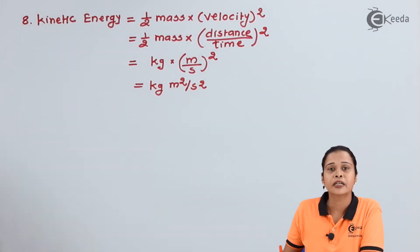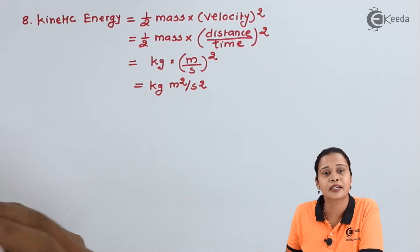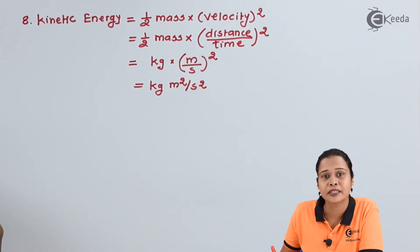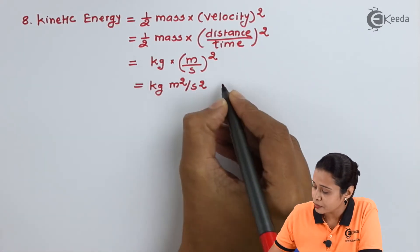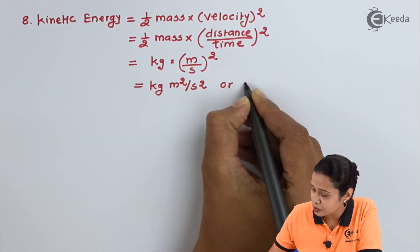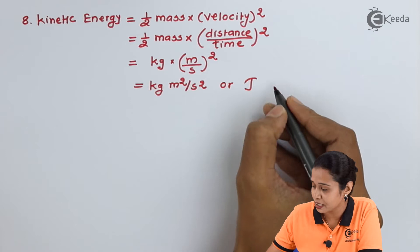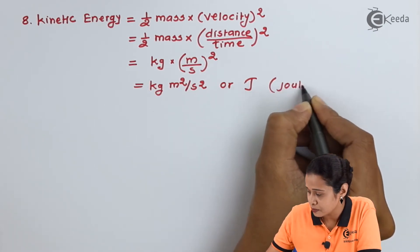Kinetic energy is a form of energy, so it has another unit. In the SI system, kinetic energy can be expressed in joules. So the other unit we can write is joules, denoted by capital J.